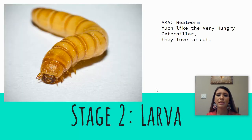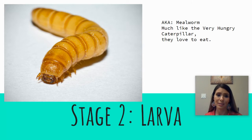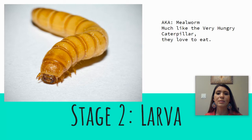Stage two is the larva, also known as the mealworm. Much like the very hungry caterpillar, they love to eat. In our lab we typically feed them oatmeal and apple slices.